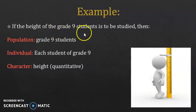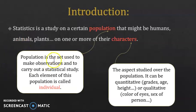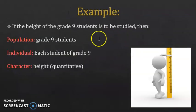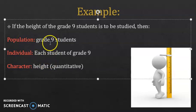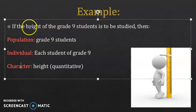Example: if the height of grade 9 students is to be studied, then what's the population? The population is the set that you are making the study on, so here it's grade 9 students. Each individual would be each student of grade 9. The character is height, and since it can be measured by numbers, it's quantitative.